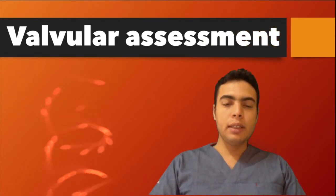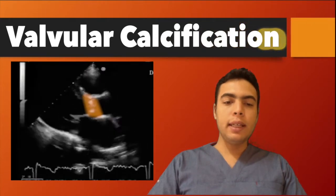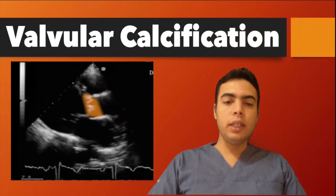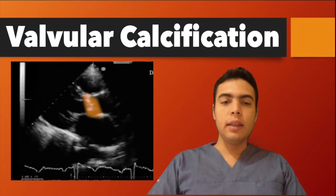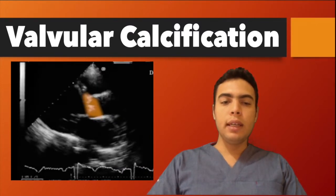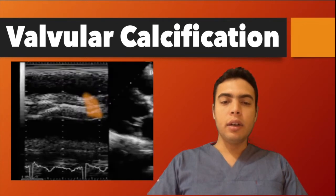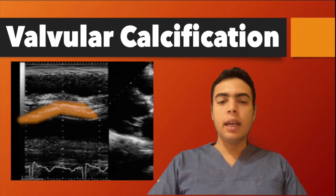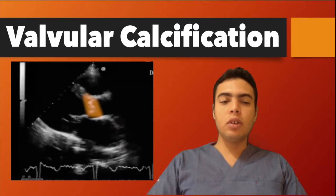We will start with valvular calcification. In M-mode you will see a bright white color representing the calcification, and in 2D mode you will see thickening of the valve and heterogeneous echogenicity.